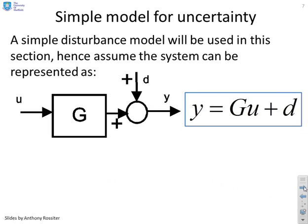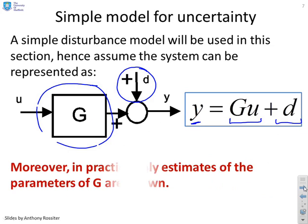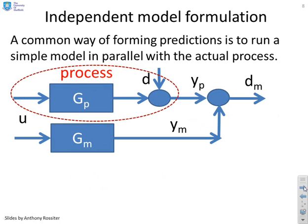Here's a simple model for uncertainty then. We're going to use what's called a simple output disturbance model. You can see I've got my process here, G, and I'm going to assume there's a disturbance which affects the output. And so the signal I can actually see is Y equals GU plus D.